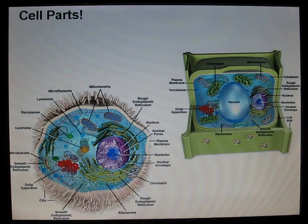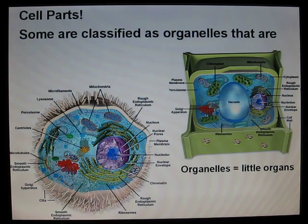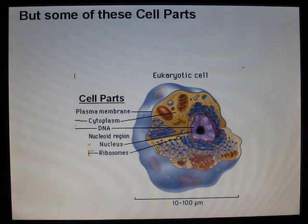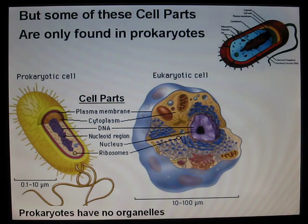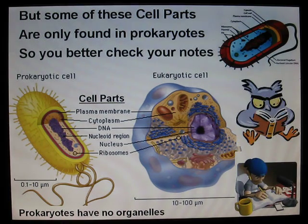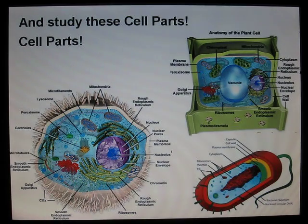Cell parts — some are classified as organelles found in eukaryotes, but some of these cell parts are only found in prokaryotes, so you better check your notes and study these cell parts. Cell parts, cell parts.